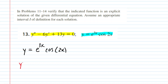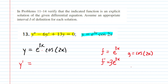We begin by computing the first derivative y prime. We have a product of two functions — e to the 3x and cosine of 2x — so we need to do the product rule. We let f equal e to the 3x and g equal cosine of 2x. Then f prime is 3e to the 3x. For g prime, the derivative of cosine is negative sine, giving negative sine of 2x, and by the chain rule we multiply by 2, so g prime is negative 2 sine of 2x.